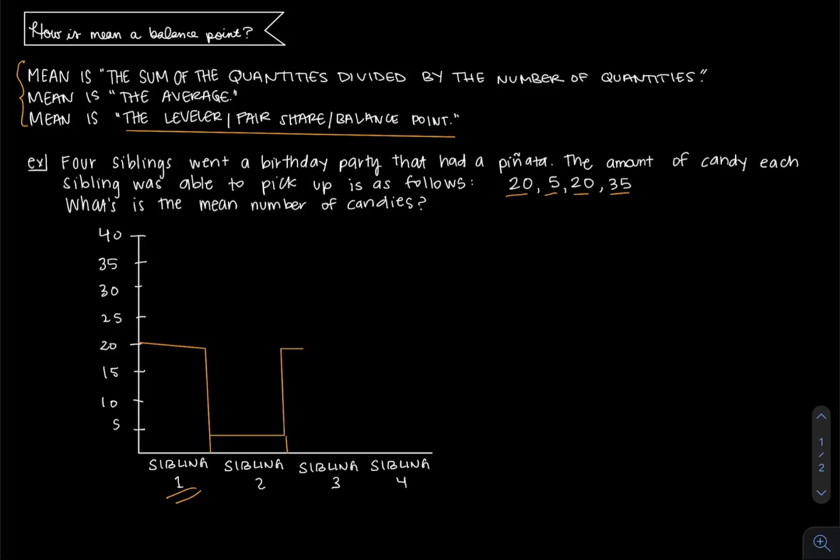Then the next sibling got 20 pieces as well. And the last sibling received 35 pieces. So each sibling gets a bar height according to how many pieces they got.